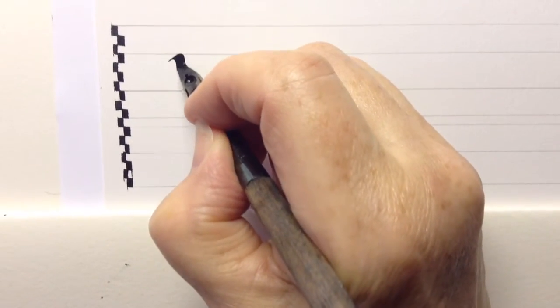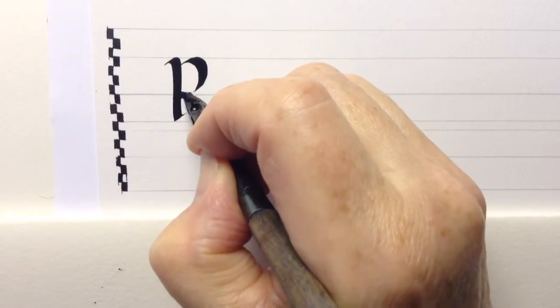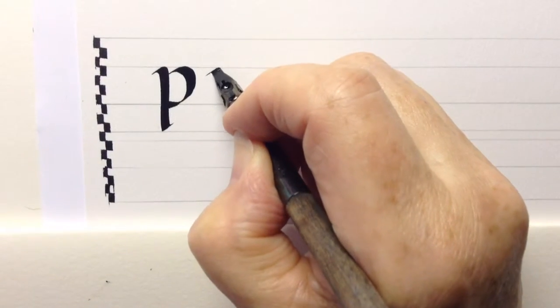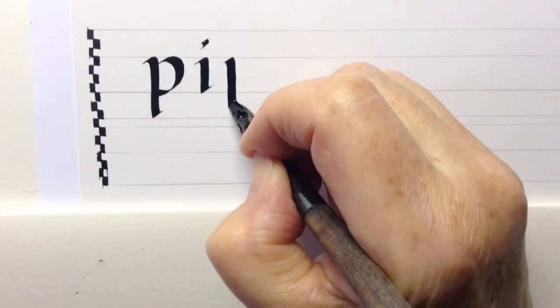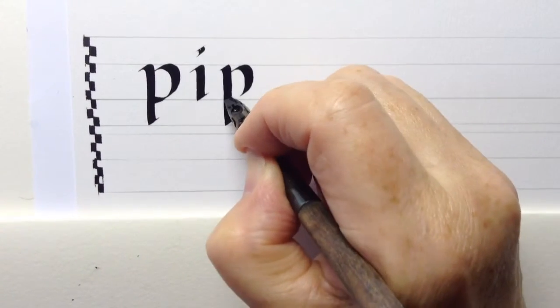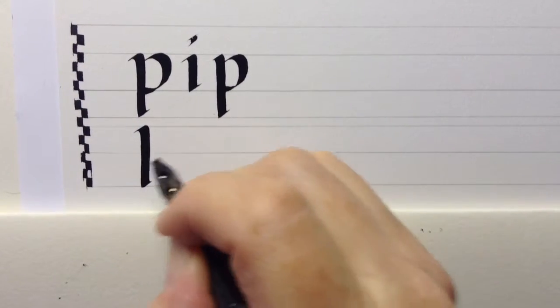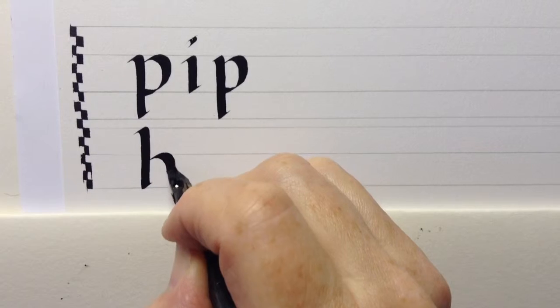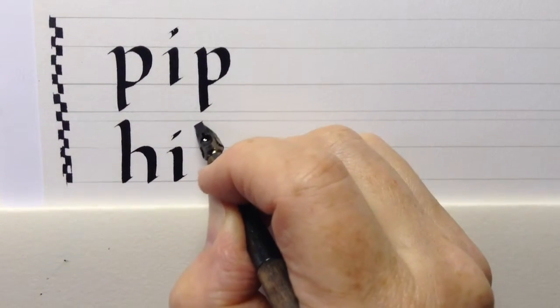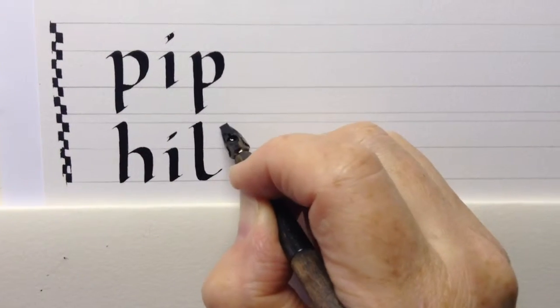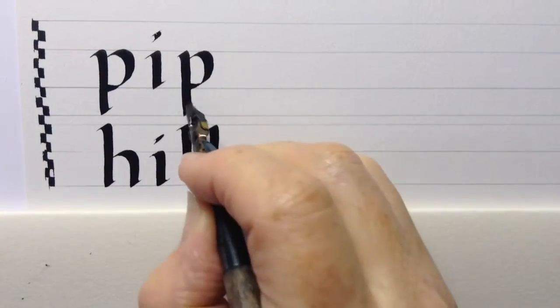So if I write the word, and again I'm writing this quite quickly so my letter forms are not fantastic and I will say that that is my excuse. And straight under that comes the word hill.